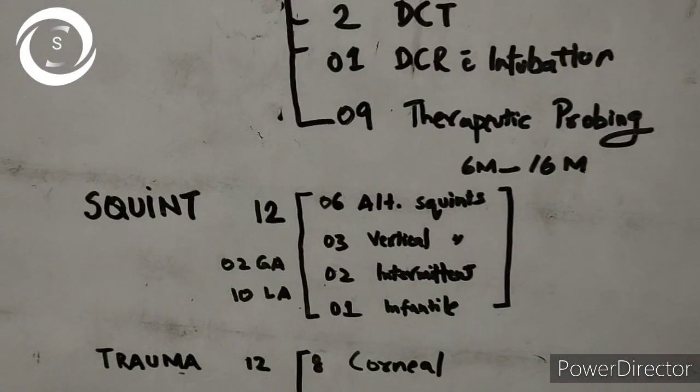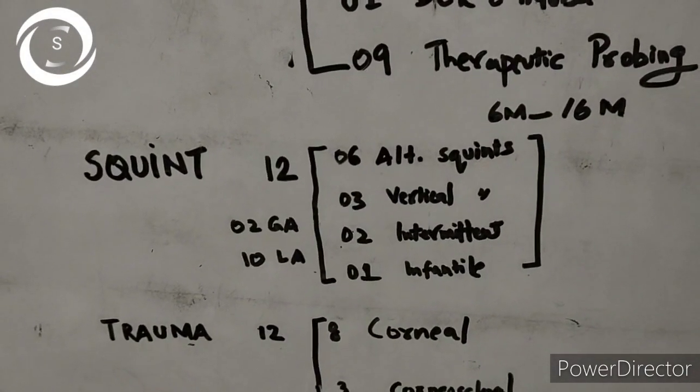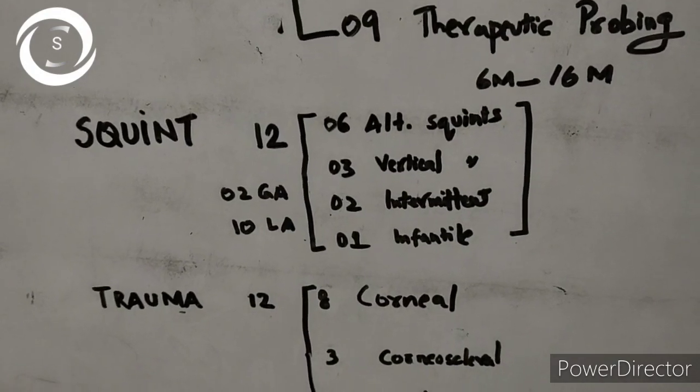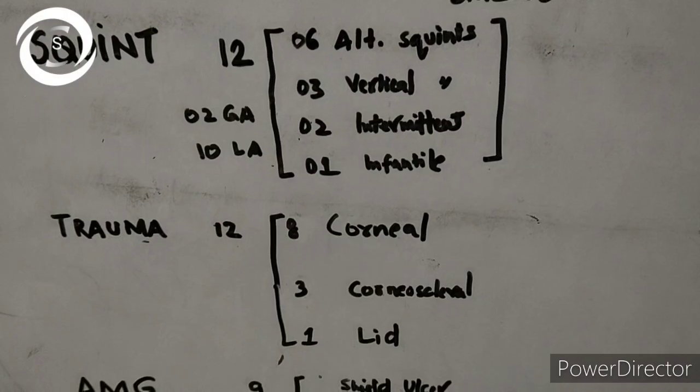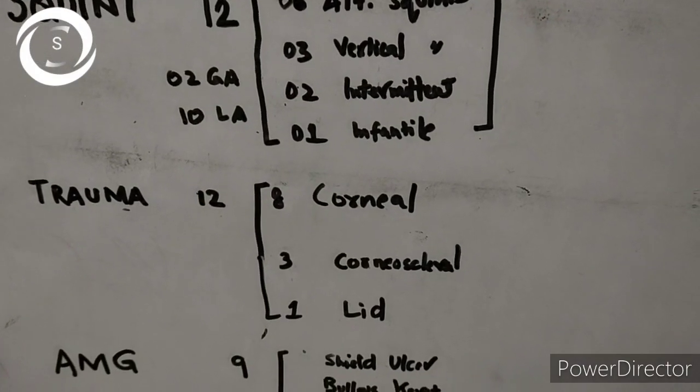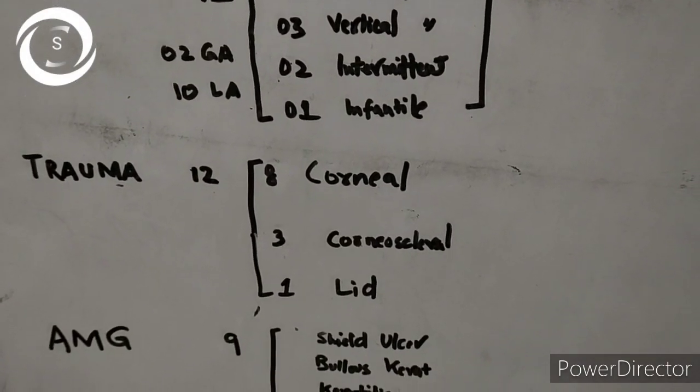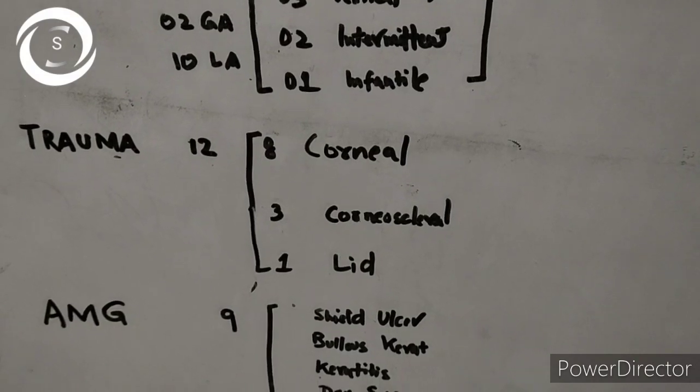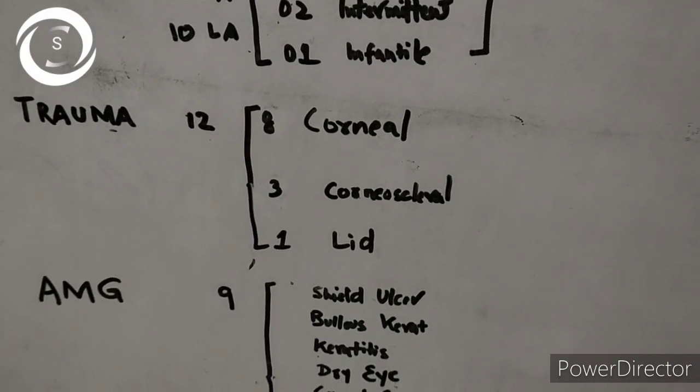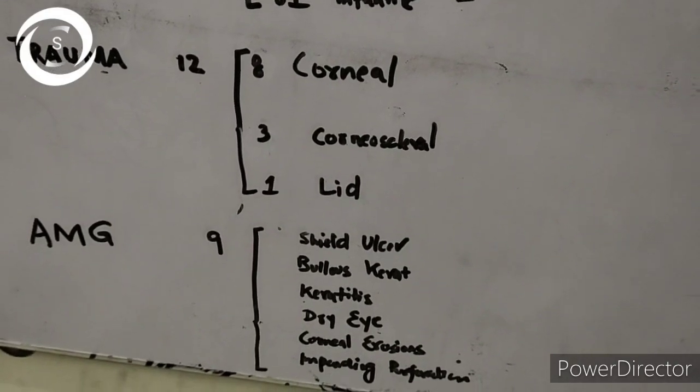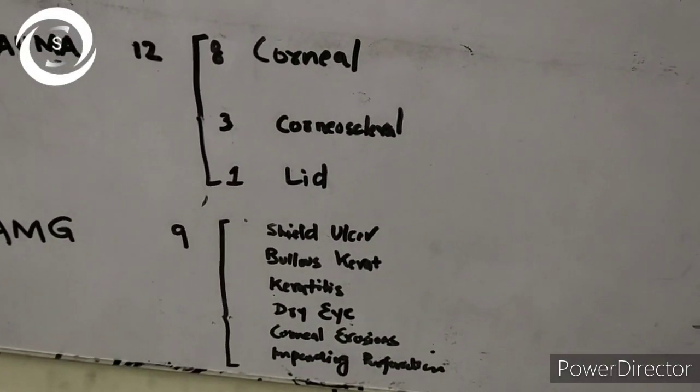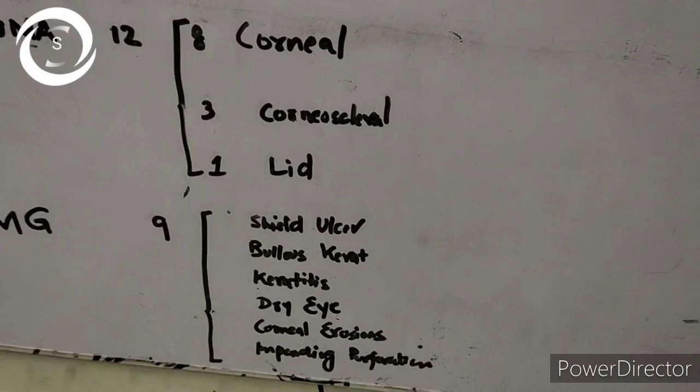After trauma, the other most common surgery I performed was amniotic membrane grafting. I performed 9 procedures of AMG - I grafted it for shield ulcer, bullous keratopathy, fungal keratitis, severe dry eye, filamentary keratitis, recurrent corneal erosion patient, and impending perforation patient.